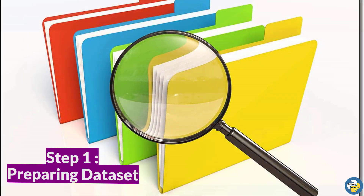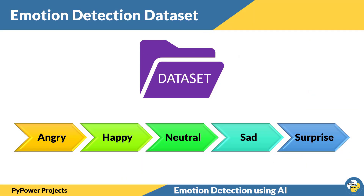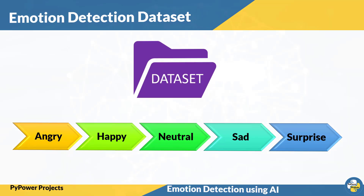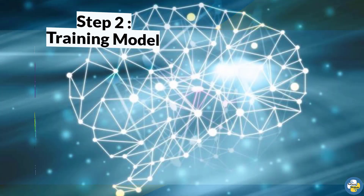Step one: preparing the dataset. In this dataset we have curated a total of five classes, that is five emotions — angry, happy, neutral, sad, and surprise. These five types of emotion can be detected based upon our dataset. You can increase the number of emotions by collecting the dataset of that particular emotion while training the model.